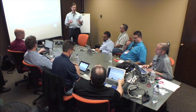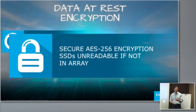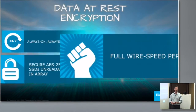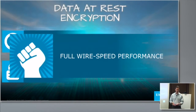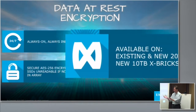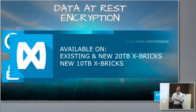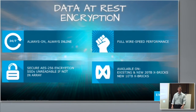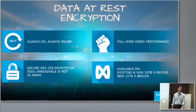The next thing that happens is the data that's now being protected and committed to disk — 100% inline, always on. You can choose to enable encryption on the array or not, but once you enable it, it's always happening. We have no change in the performance profile when encryption is on, so it's the exact same performance specs either way.